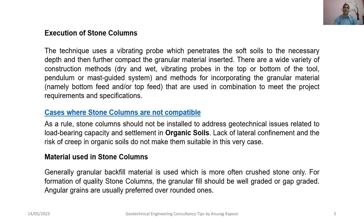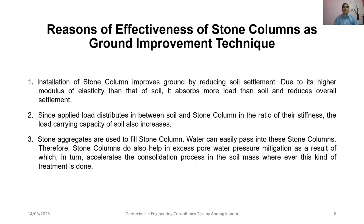The reasons for the effectiveness of stone columns as a ground improvement technique: first, the installation of a stone column improves ground by reducing soil settlement, because its higher modulus of elasticity compared to the surrounding soil means it absorbs more load than the tributary soil, reducing overall settlement. Second, since the applied load distributes between the soil and the stone column in the ratio of their stiffness, the load-carrying capacity of the soil also increases.